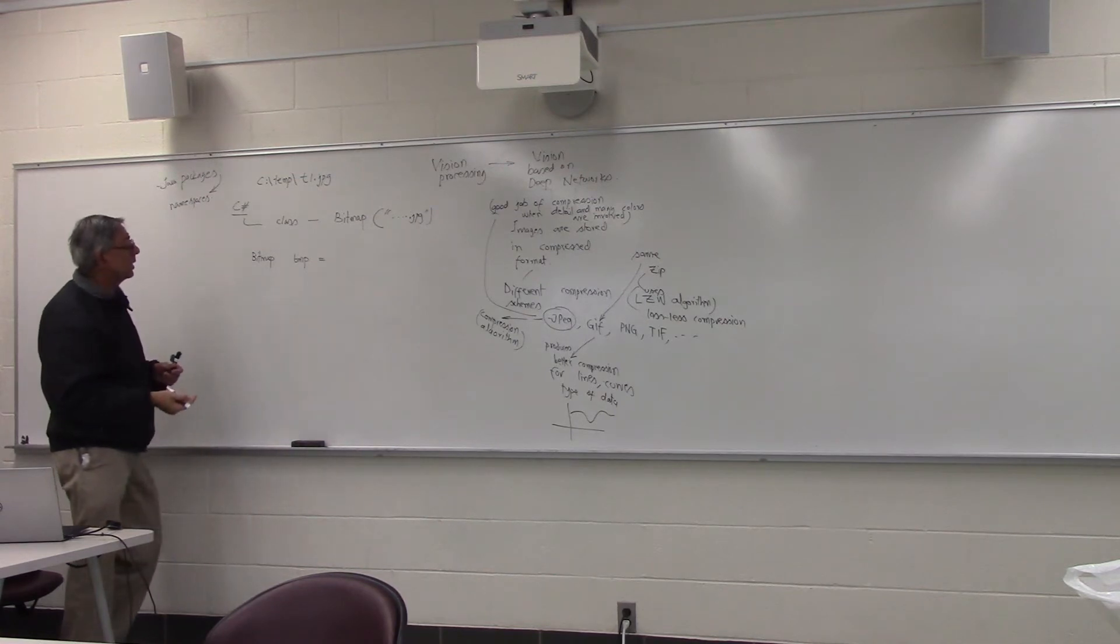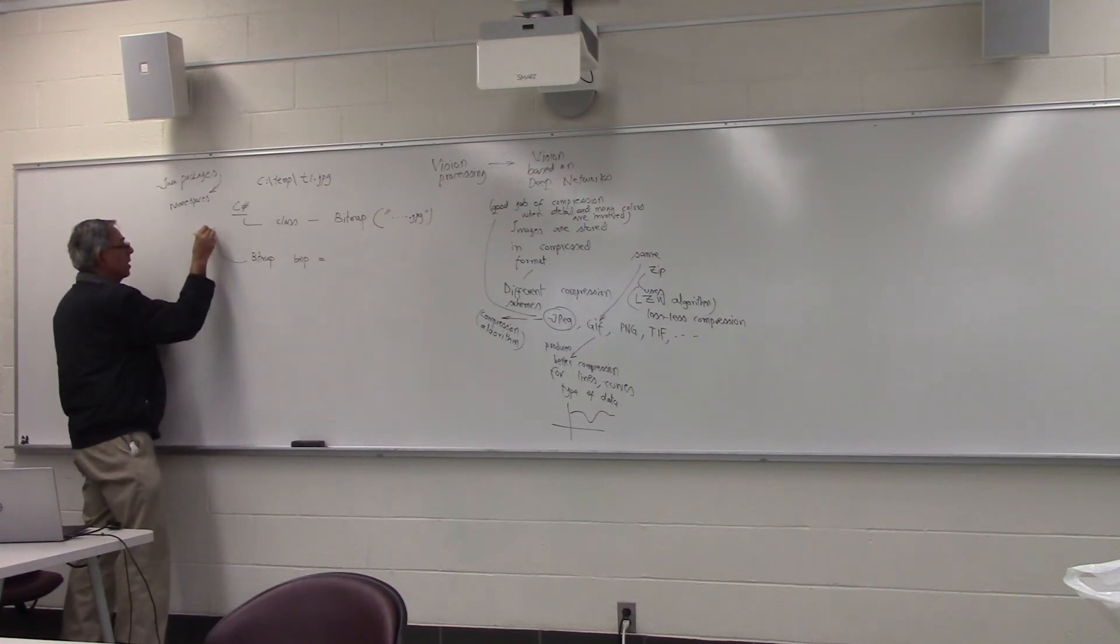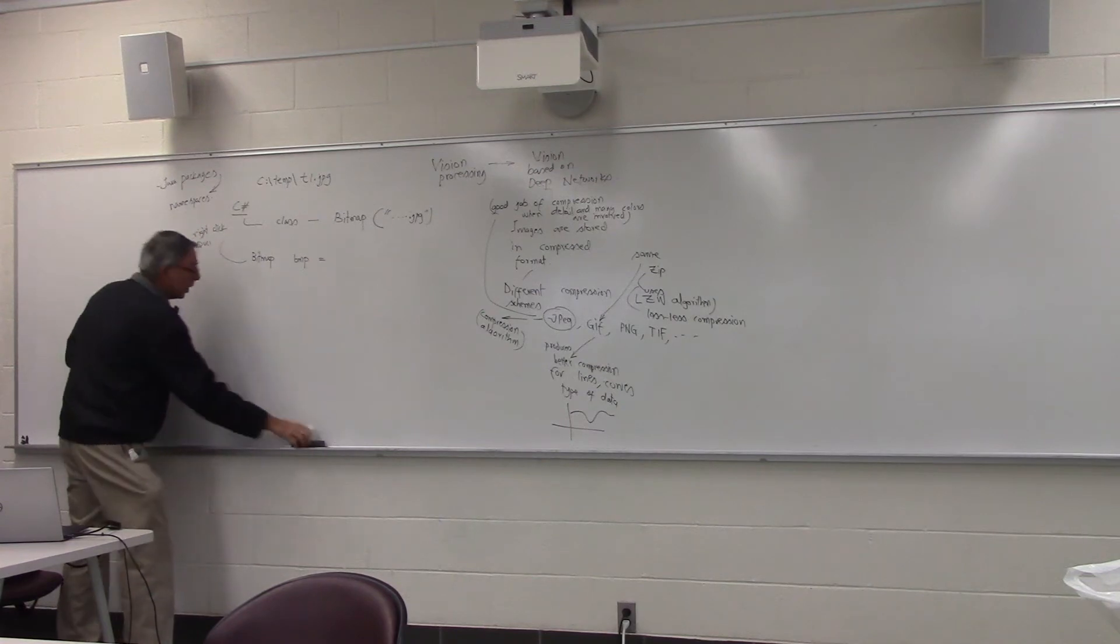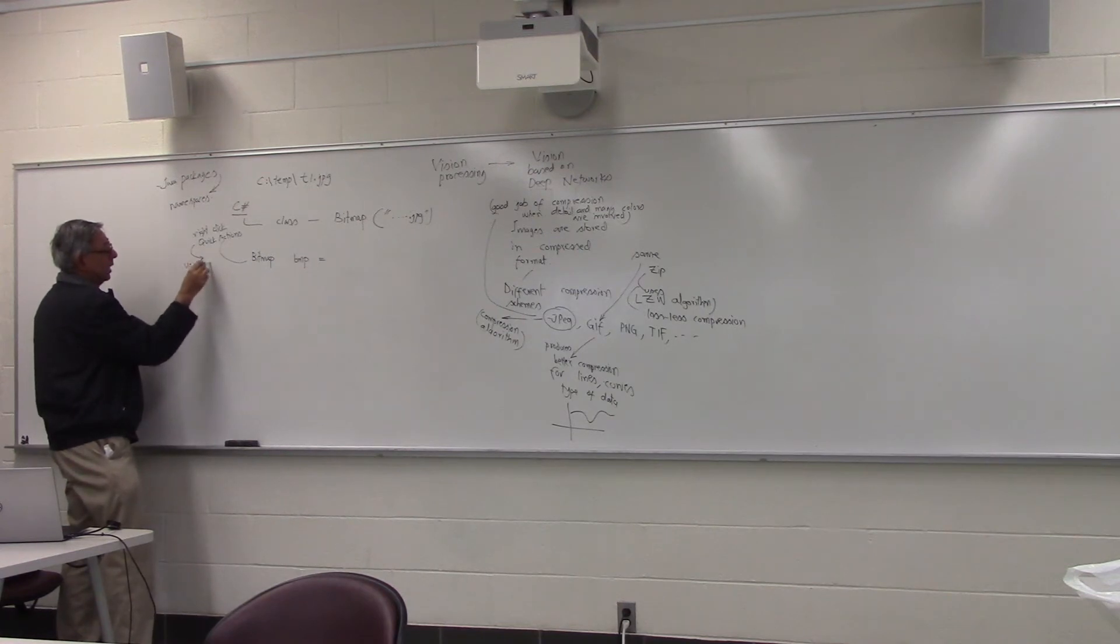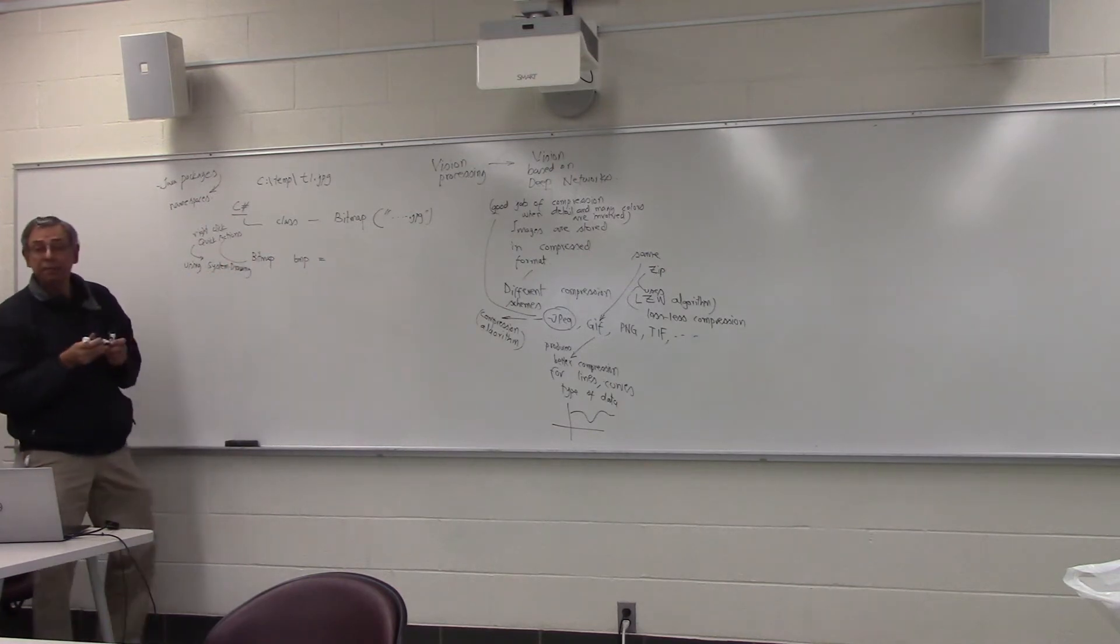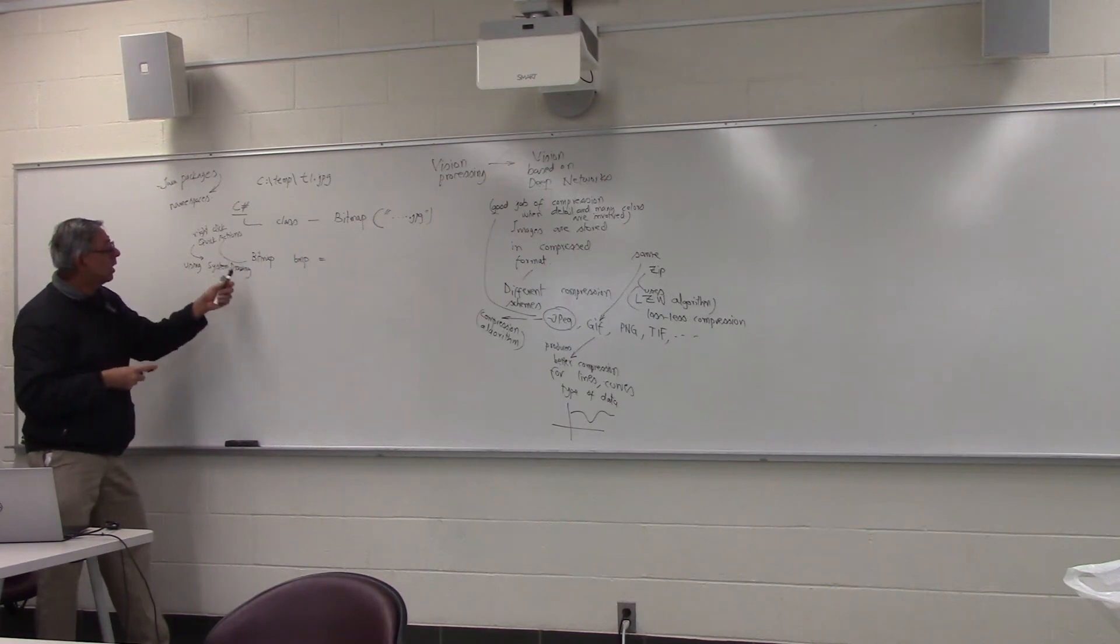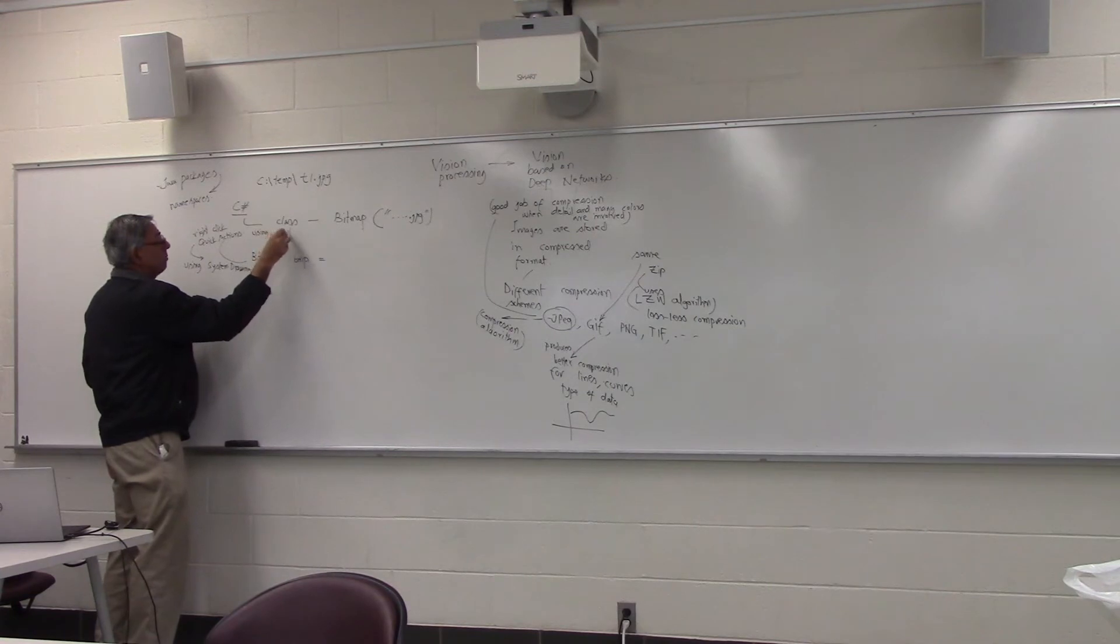All you have to do is right click on it and you will see an option called quick actions. From the quick actions, it will give you some statement using, for example, system.drawing. That's the namespace in which this Bitmap class is already defined. All you do is right click. If it's giving you some red squigglies that doesn't recognize it, right click quick actions. Once you see the using statement, just click on it. It will end up typing this for you using system.drawing.